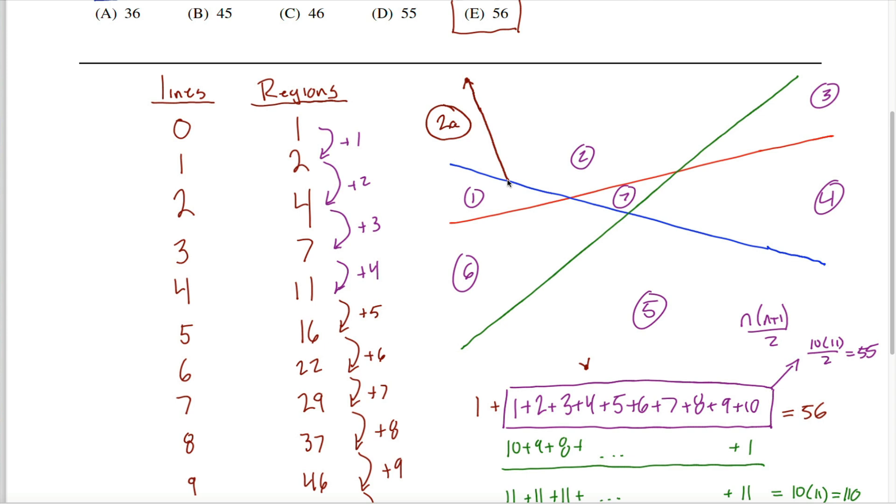If I now continue drawing this line until I hit my next point of intersection, I'll see that the exact same thing happened. This region, formerly known as region 1, has been split into 2. Maybe I'll call them 1 and 1a.